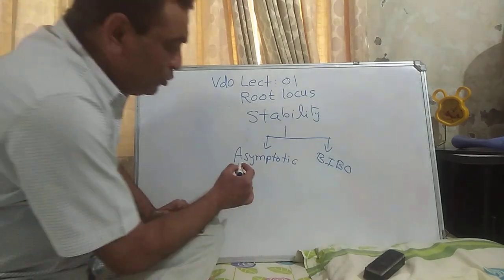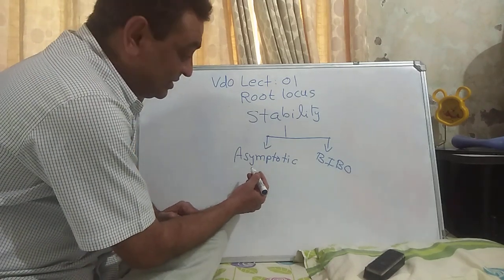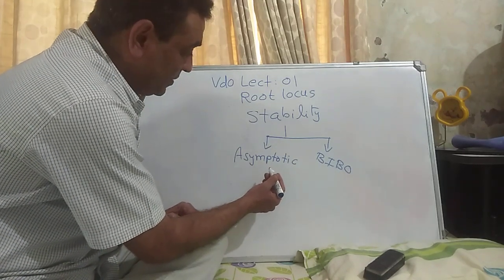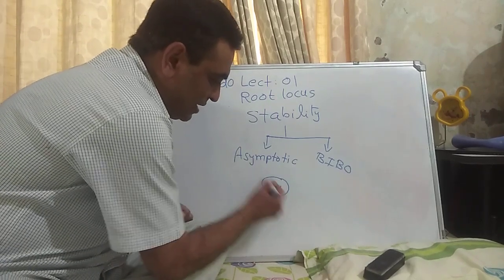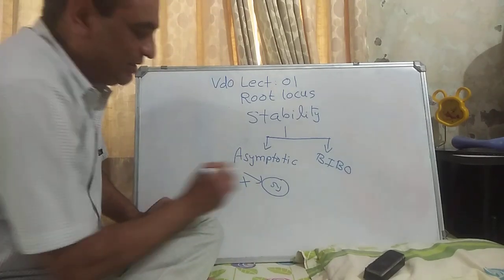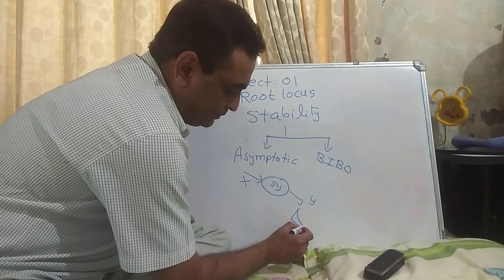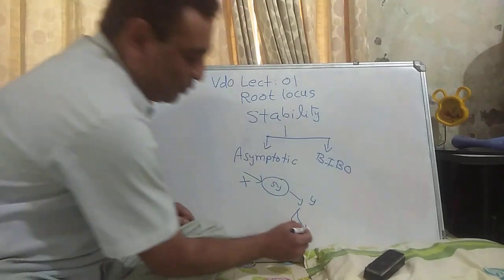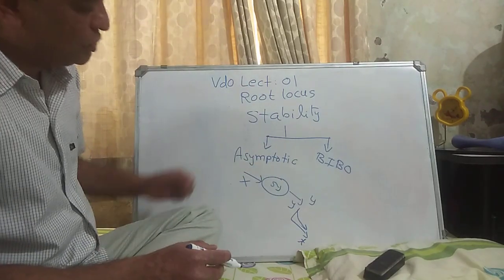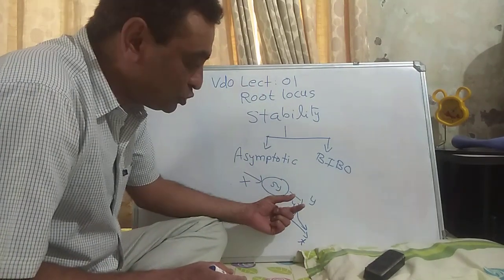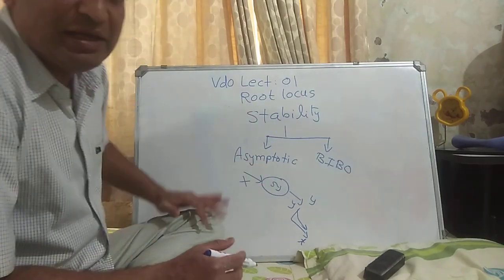What do we mean by asymptotic stability? The meaning of asymptotic stability is that under the absence of input — if there is a system and there is no input — then the output goes towards the origin. As time progresses the output will go towards the origin. So under the absence of input, if the output goes towards zero, the system is asymptotically stable.